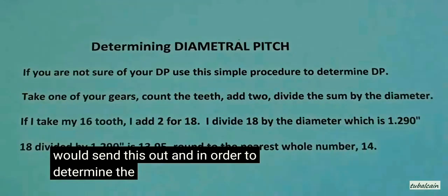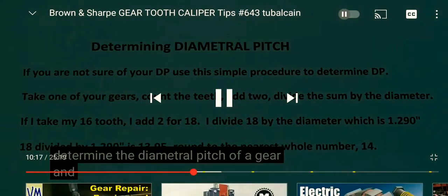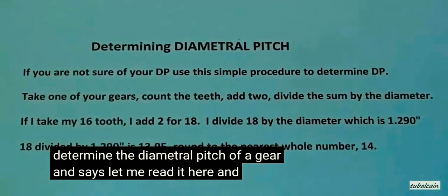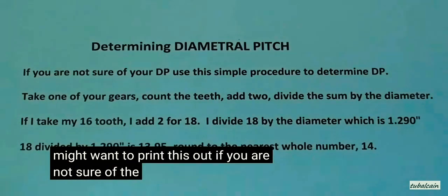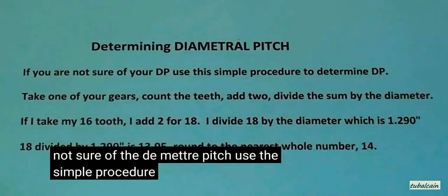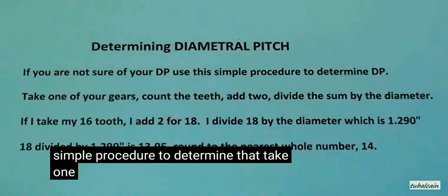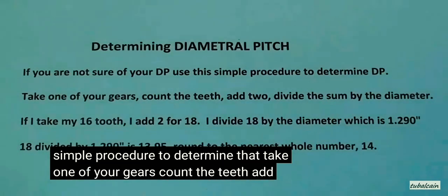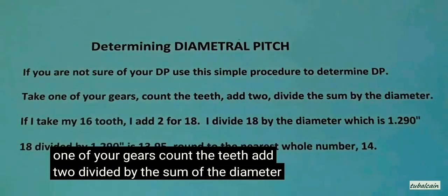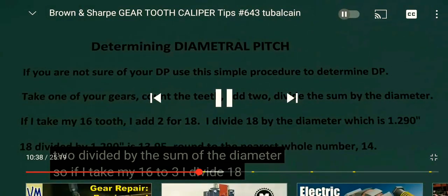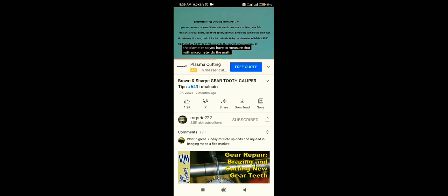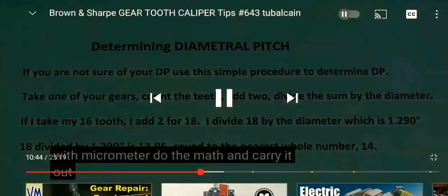And in order to determine the diametral pitch of a gear, it says, let me read it here, and you might want to print this out. If you are not sure of the diametral pitch, use the simple procedure to determine that. Take one of your gears, count the teeth, add two, divide by the sum of the diameter. So if I take my 16 tooth and I add two for 18, I divide 18 by the diameter. So you have to measure that with a micrometer. Do the math and carry it out to the...